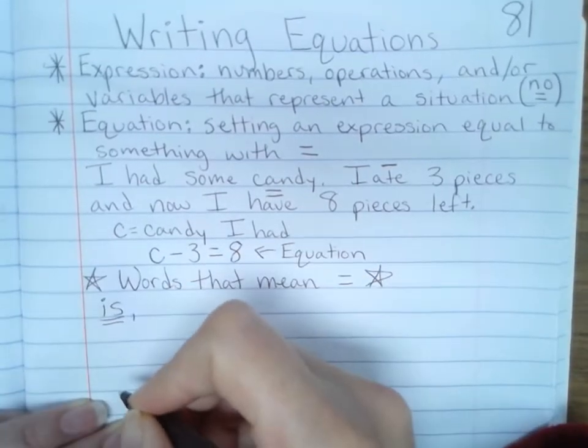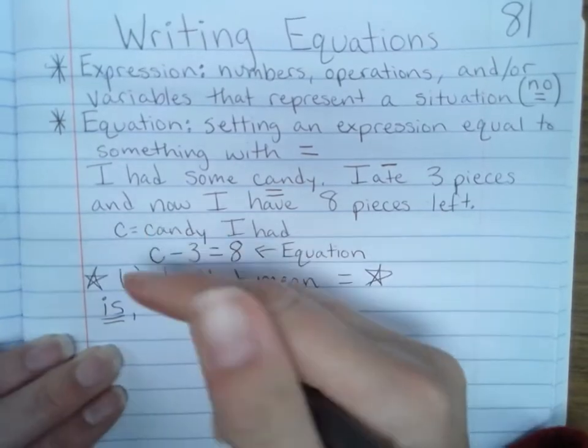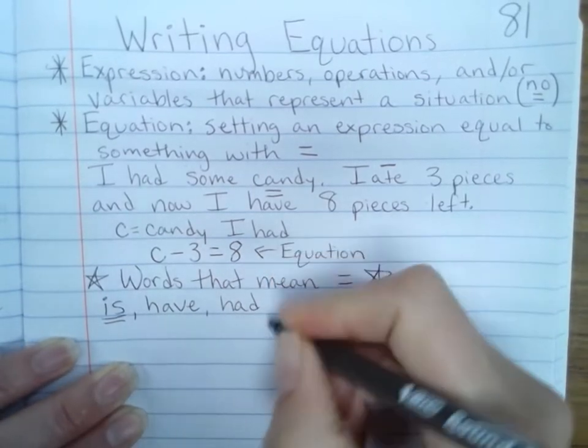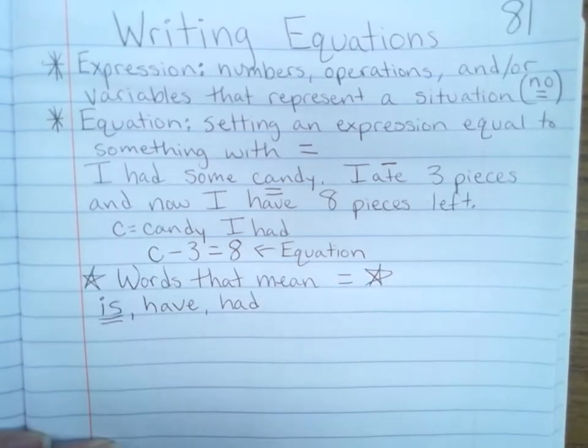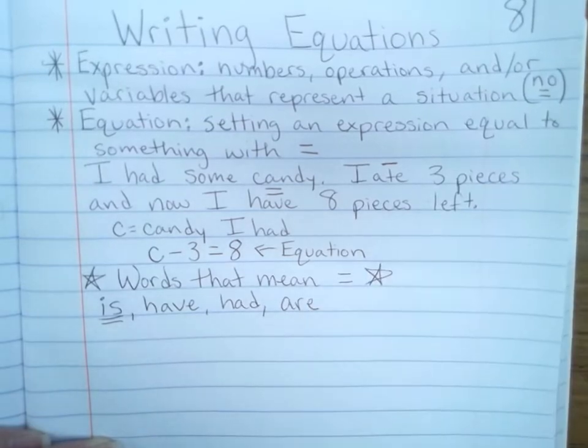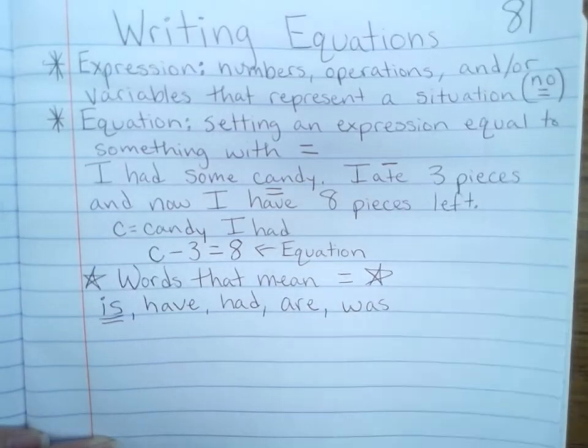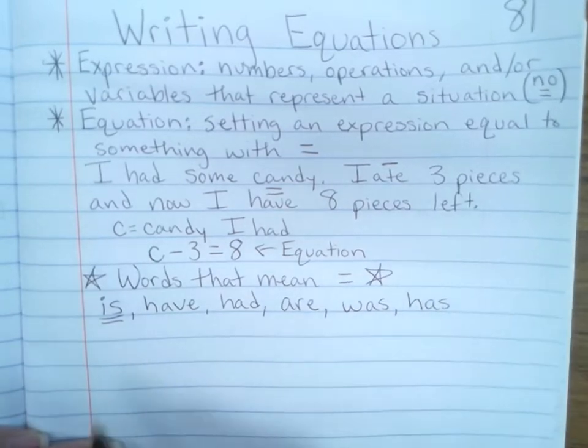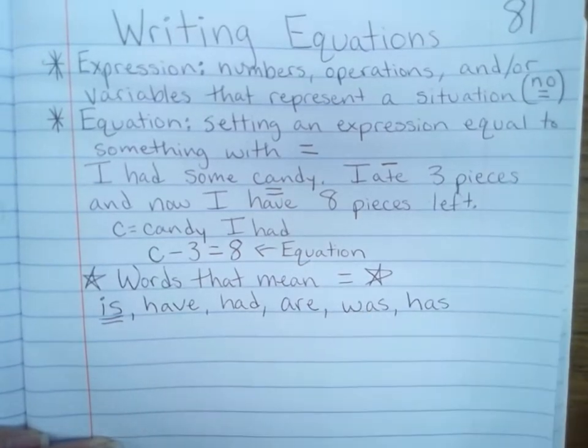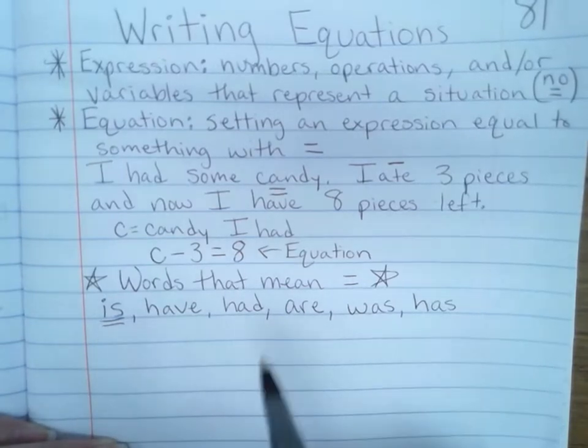Two plus two is four. But there might also be, this is where you're going to have to think a little English language arts stuff with me. I want you to think of other forms of the word is. Have, past tense had, there are, are is another one, was, has. See how these are all forms of the word is. I have five dollars, I had five dollars, there are five dollars, there was five dollars, she has five dollars. But all of these help you to know that you're talking about equals.